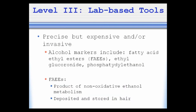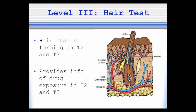The third level — lab-based screening — is quite accurate but also expensive and invasive, so it must be limited to scenarios where there is discordance or where child protection issues are involved. The main biomarker is fatty acid ethyl esters, or FAEE, essentially a byproduct of alcohol. FAEE will deposit in both hair and meconium, so these two tests can positively confirm whether mom did drink in pregnancy.